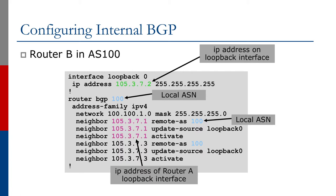If we compare router B's configuration to router A's, they're almost identical. Router B has a different local loopback address, and it peers with the other two routers, A and C. But apart from that, it's the same. So actually, rolling out IBGP across your network is easy.